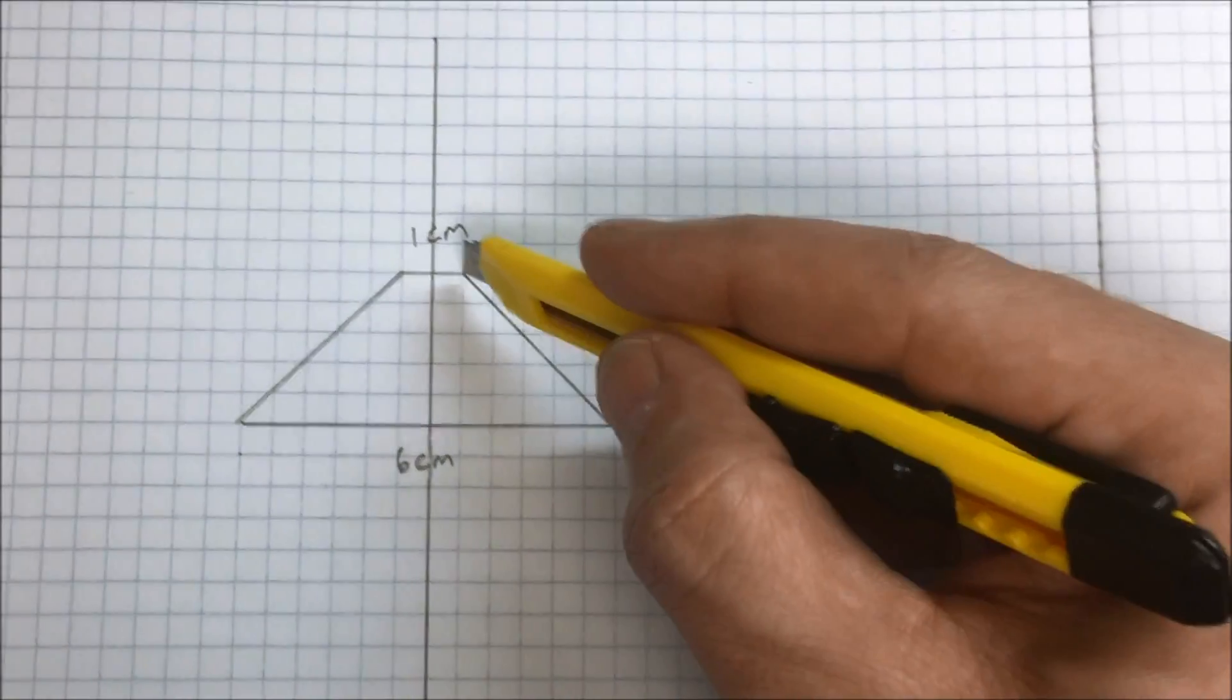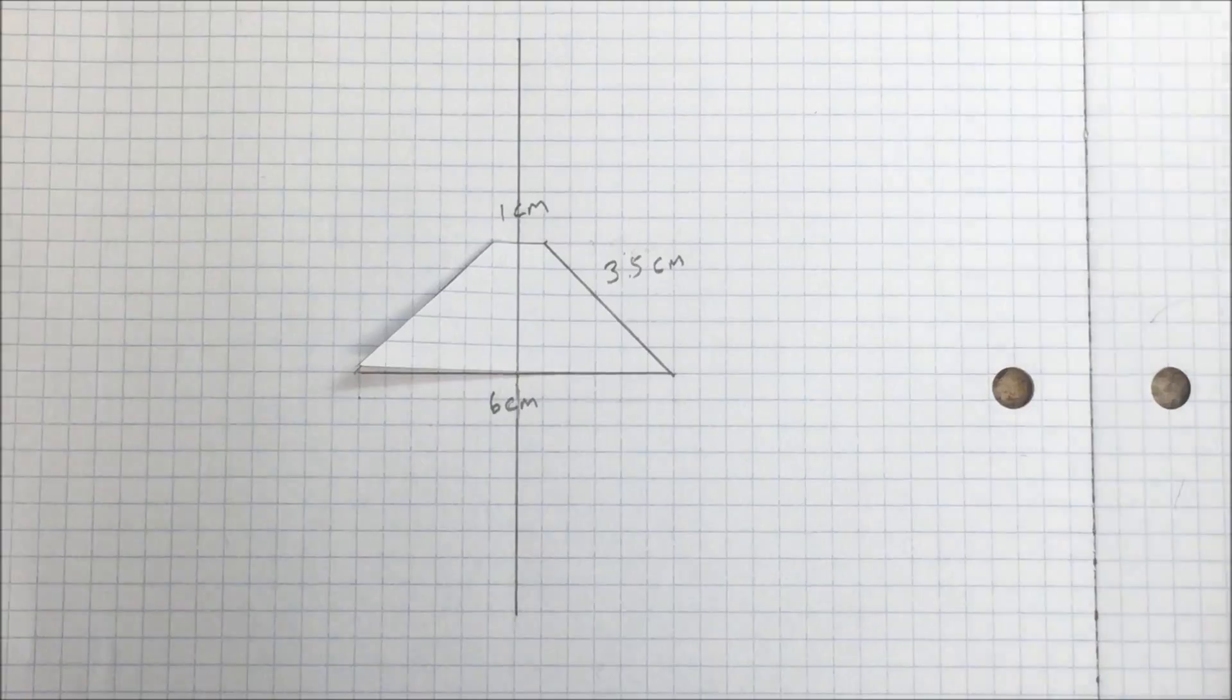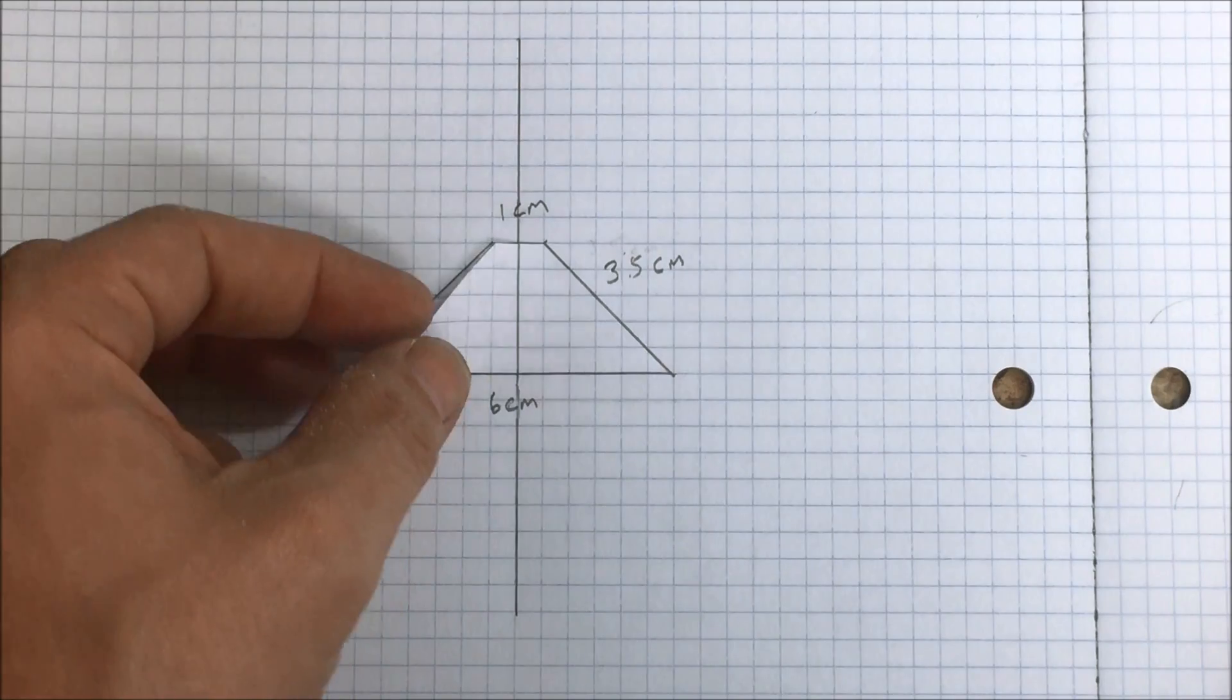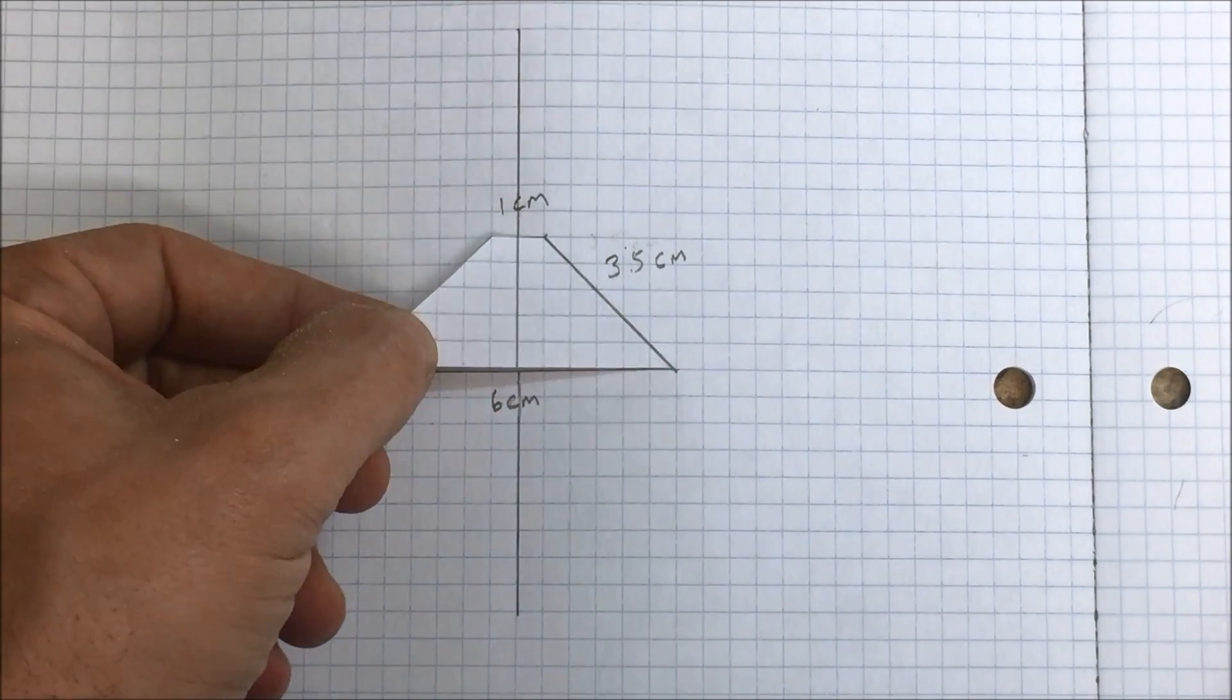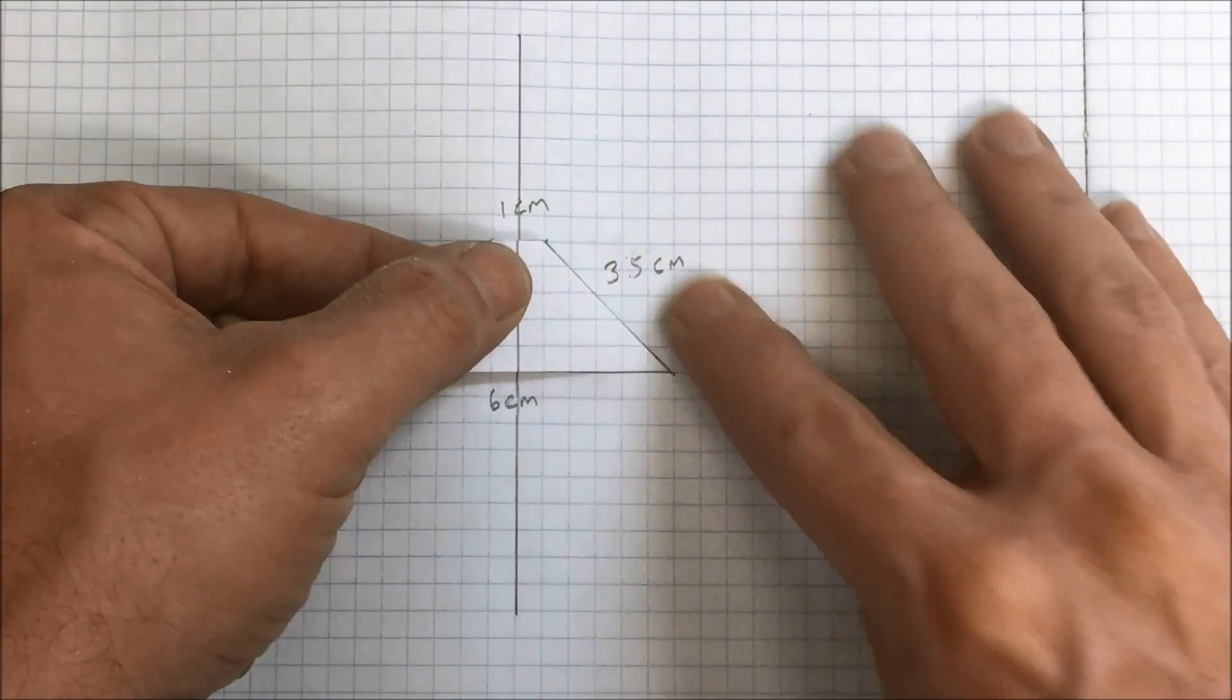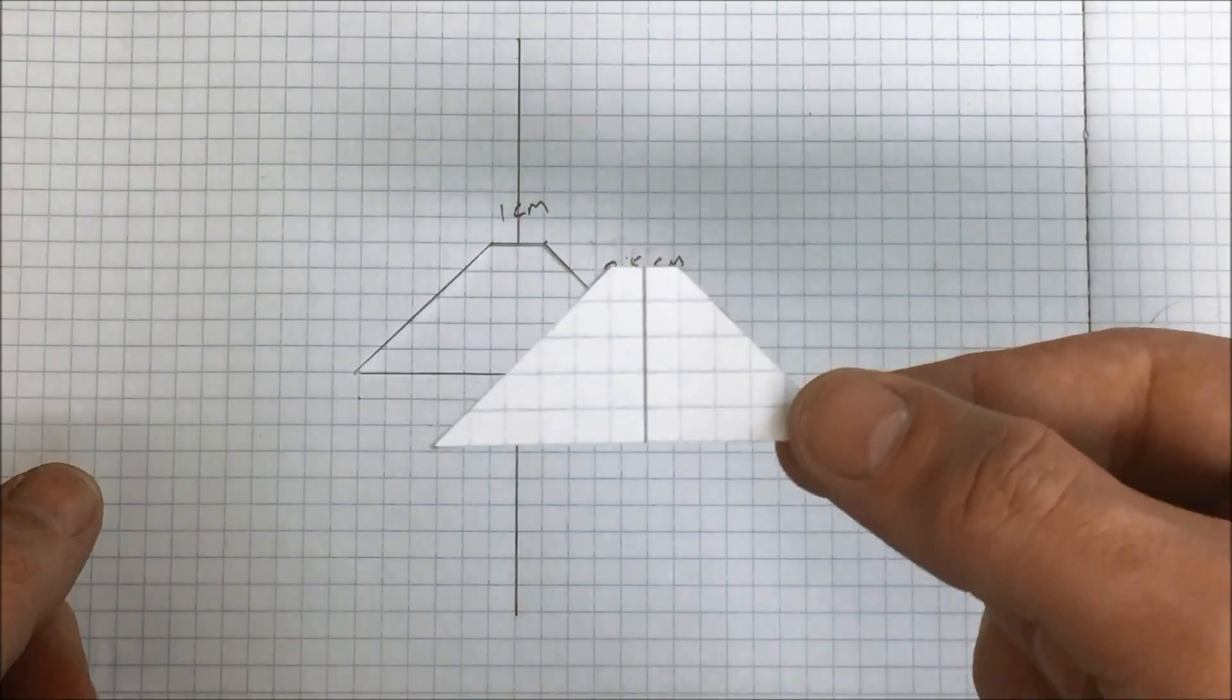Now that you've got your shape drawn out you're going to use either your scissors or your box cutter. You're just going to gently trace out your shape that you've created. And there it is.